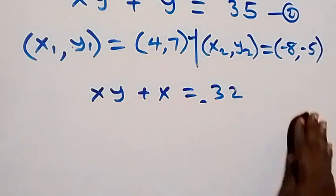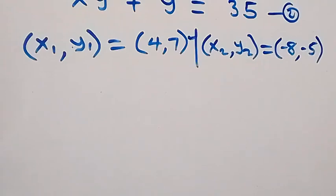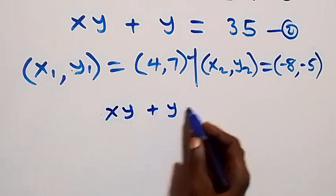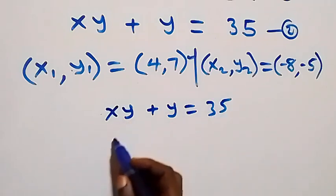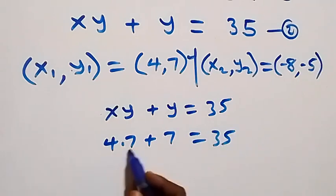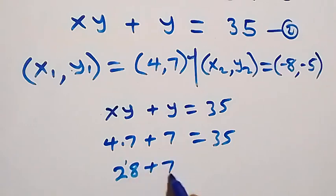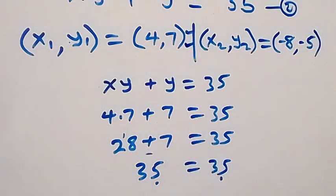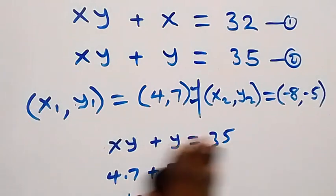Substituting (4, 7) into equation two — xy plus y equals 35 — we get four times seven plus seven equals 35. That is 28 plus 7 equals 35, which is 35. Left hand side equals right hand side, so this also satisfies equation two.